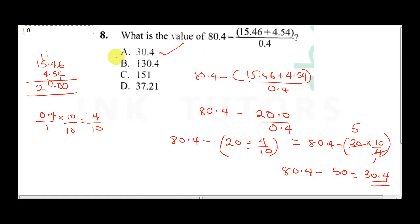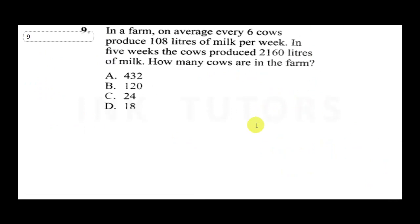The correct answer is A. Now Question 9 says: in a farm, on average 6 cows produce 108 liters of milk per week. In 5 weeks the cows produce 2,160 liters of milk. How many cows are in the farm?